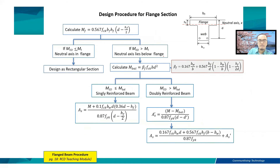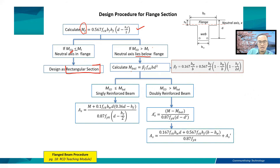Here is the procedure for flange sections. First, calculate the value of M_F using the given equations. Then check: if M_F is greater than or equal to M_ED, the neutral axis is in the flange and we design the beam using the rectangular section procedure. However, if M_ED is greater than M_F, the neutral axis lies below the flange, and we calculate M_balance using the equation where beta_F is as defined.